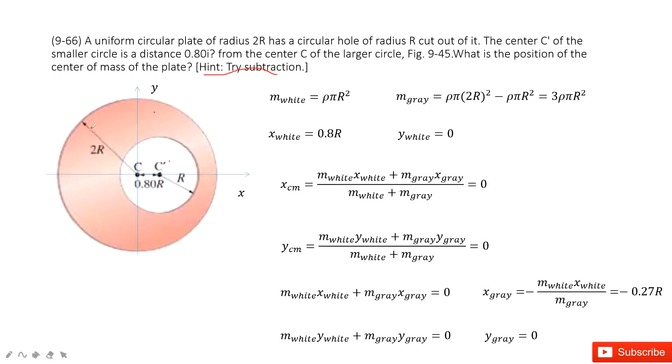And then, the huge uniform circle, the center of mass is just at the origin. So, x component is 0, y component is 0.